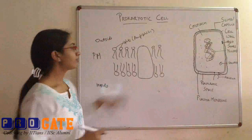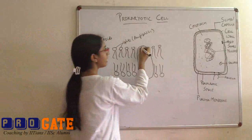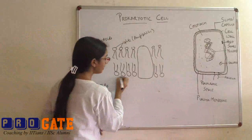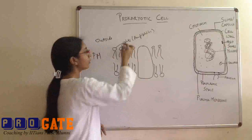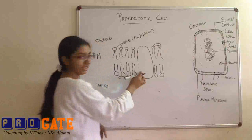In prokaryotic cells, we have proteins and these proteins may be of basic types. These could be peripheral proteins which are attached to the plasma membrane inner or outer surfaces, or the integral proteins.